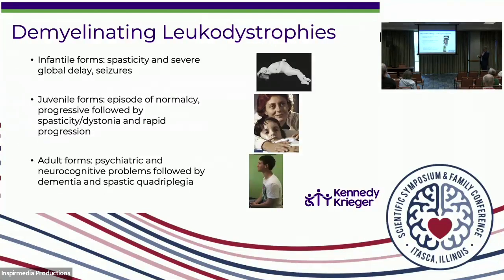Then there are demyelinating leukodystrophies, which present in roughly three forms. The infantile forms include Krabbe leukodystrophy, metachromatic leukodystrophy, Alexander disease, and Canavan disease. These are demyelinating diseases where babies often start presenting within the first few months of life. In the most severe cases they present within the first few weeks. In early infantile Krabbe disease, kids are already showing neurological abnormalities around six weeks of life.